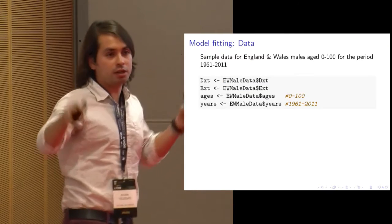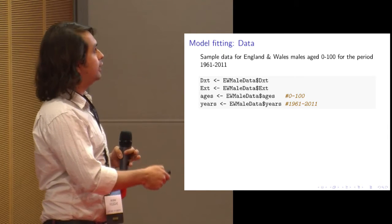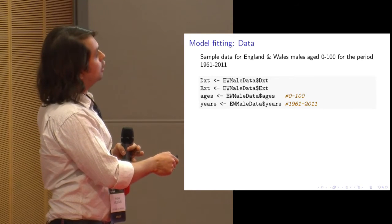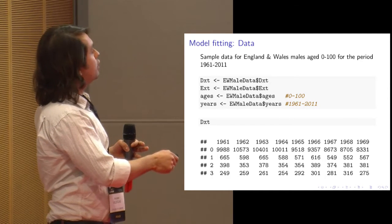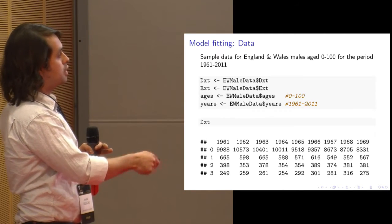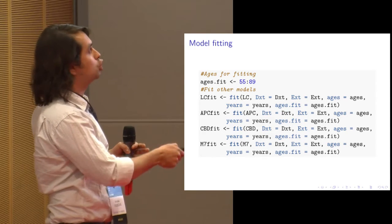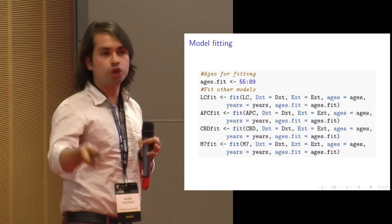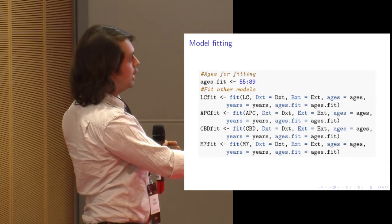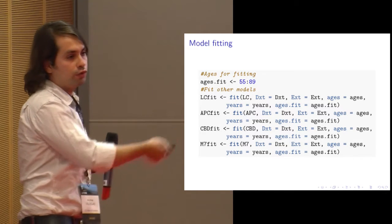Once you have defined an abstract stochastic mortality model, you fit it to data. StMoMo includes sample UK data — deaths and exposures — covering ages 0 to 100 and years 1961 to 2011. Data is organized as an array with ages on rows and years on columns. You can fit a Lee-Carter model to deaths and exposures for specific ages — say 55 to 89 — and certain years.